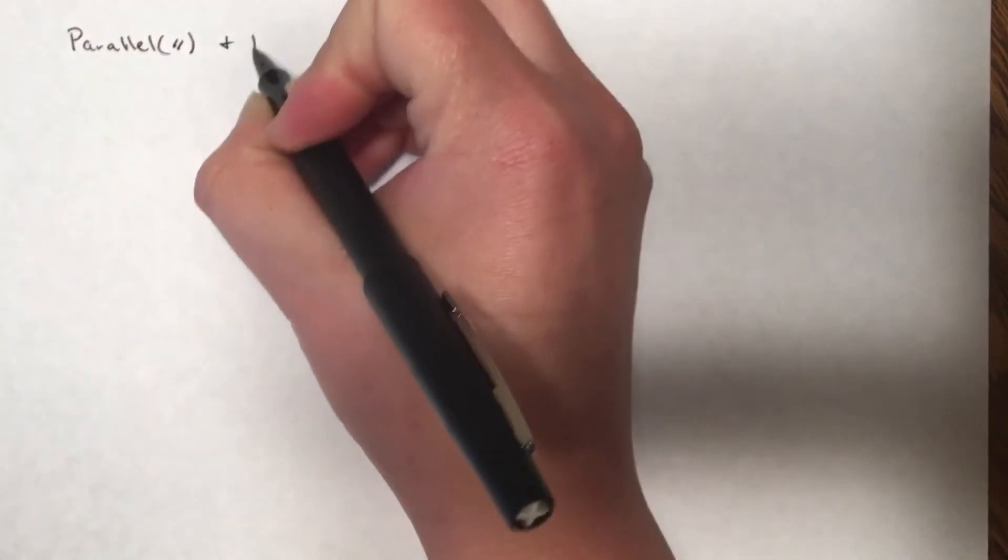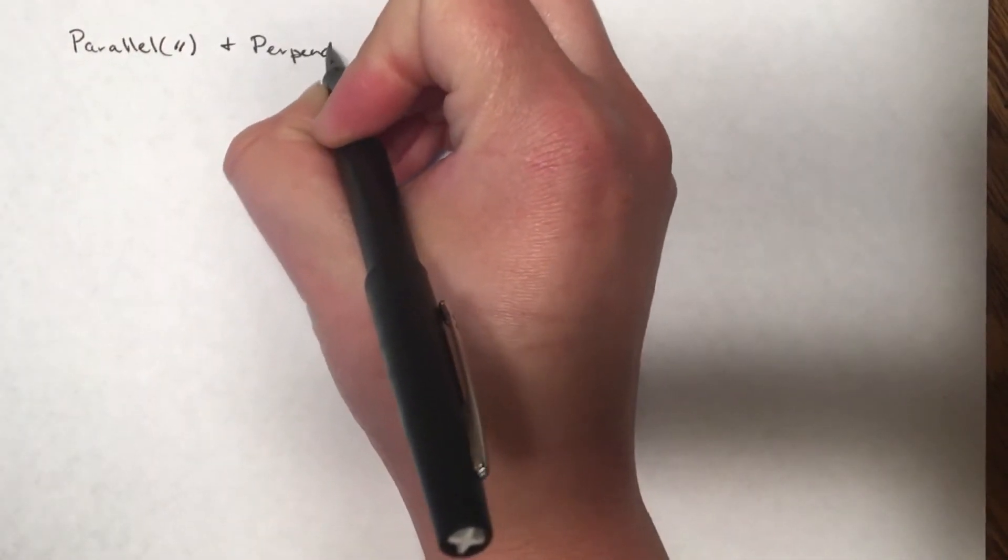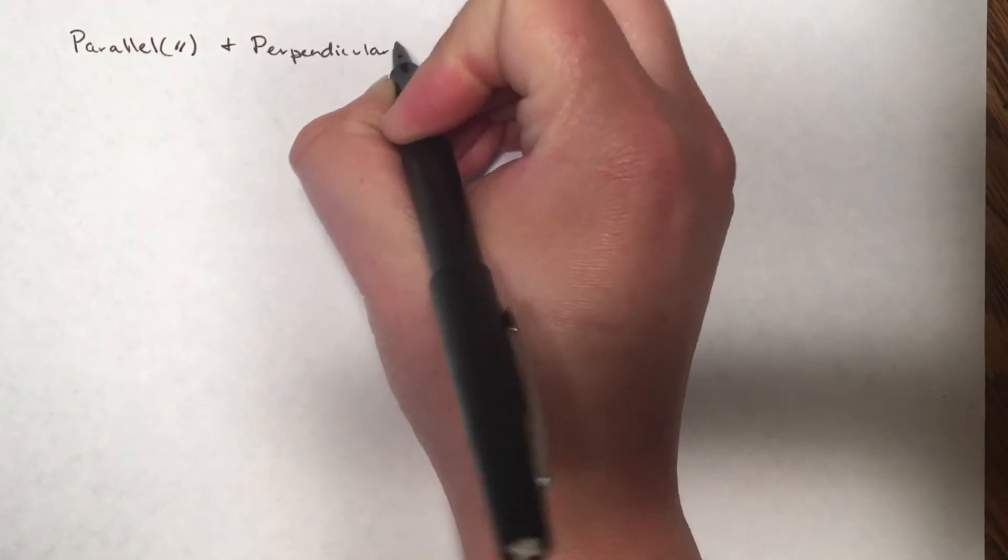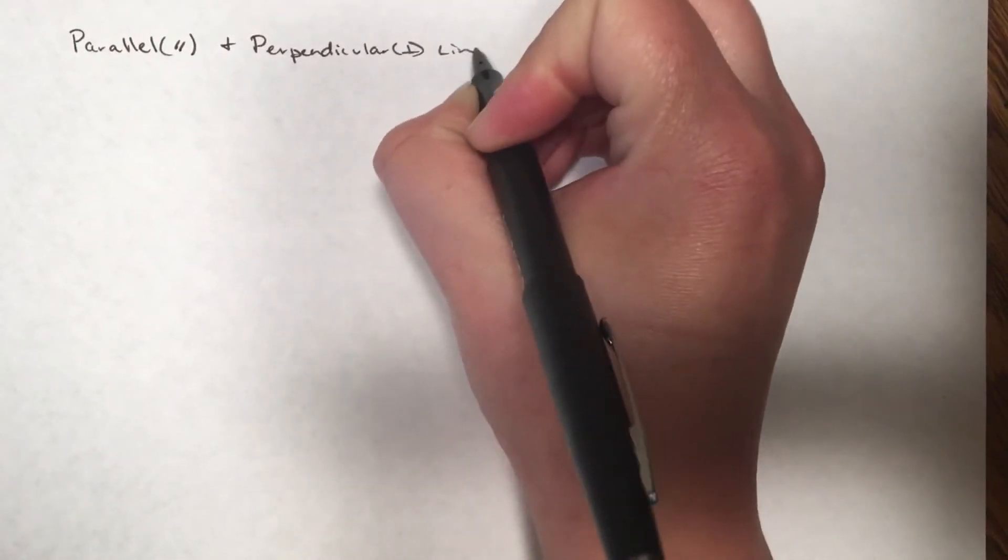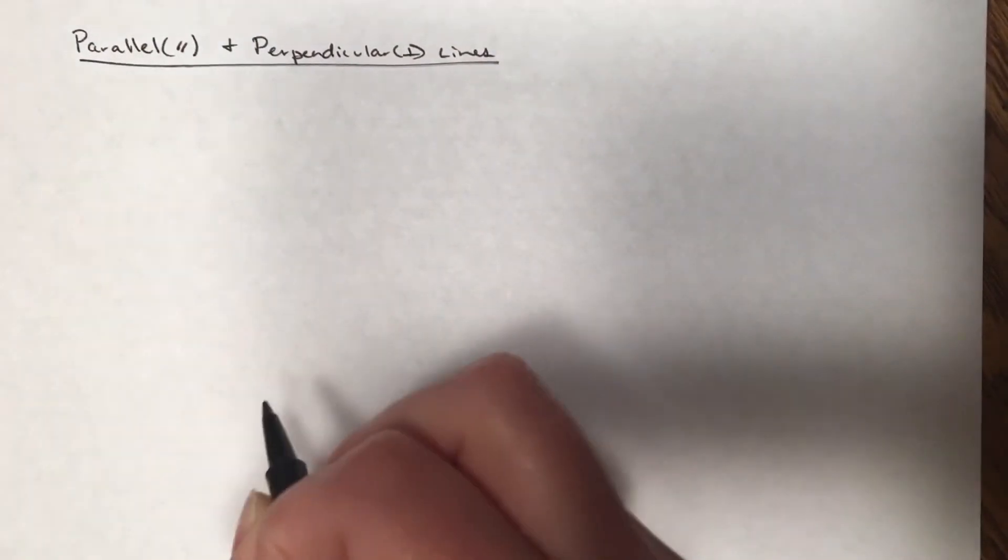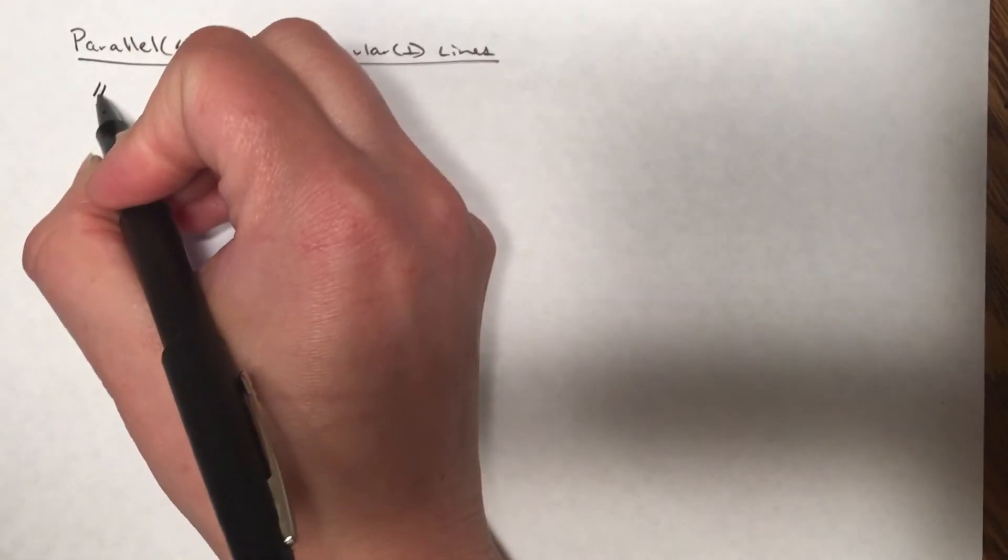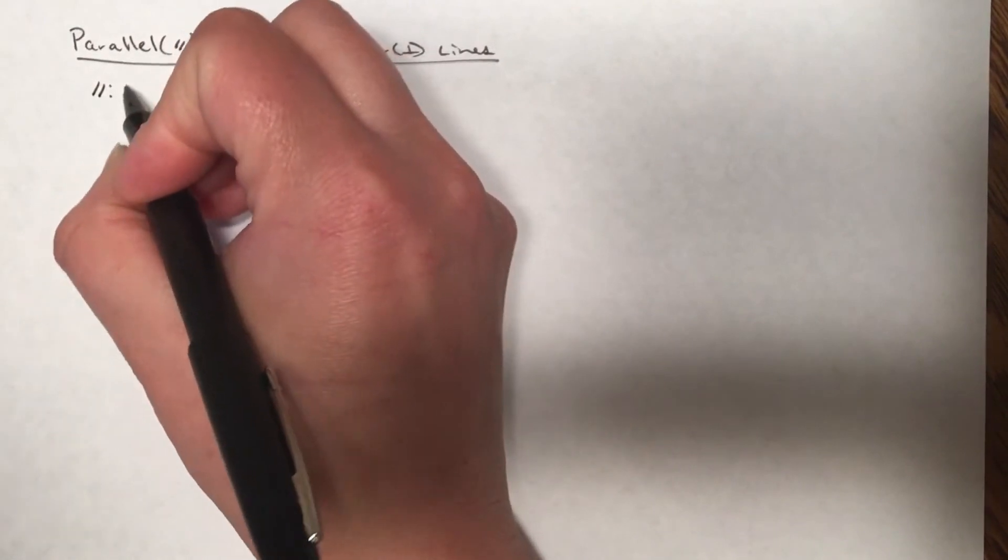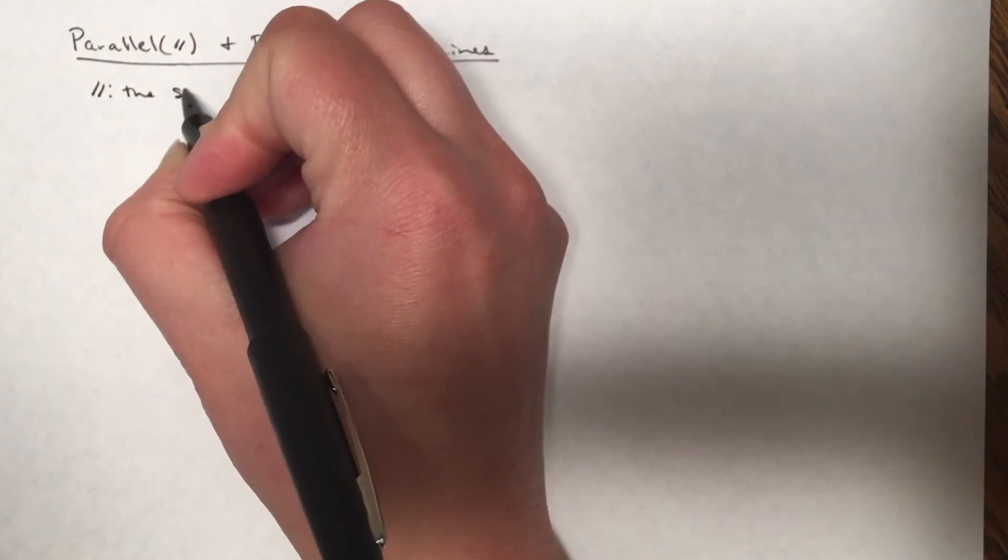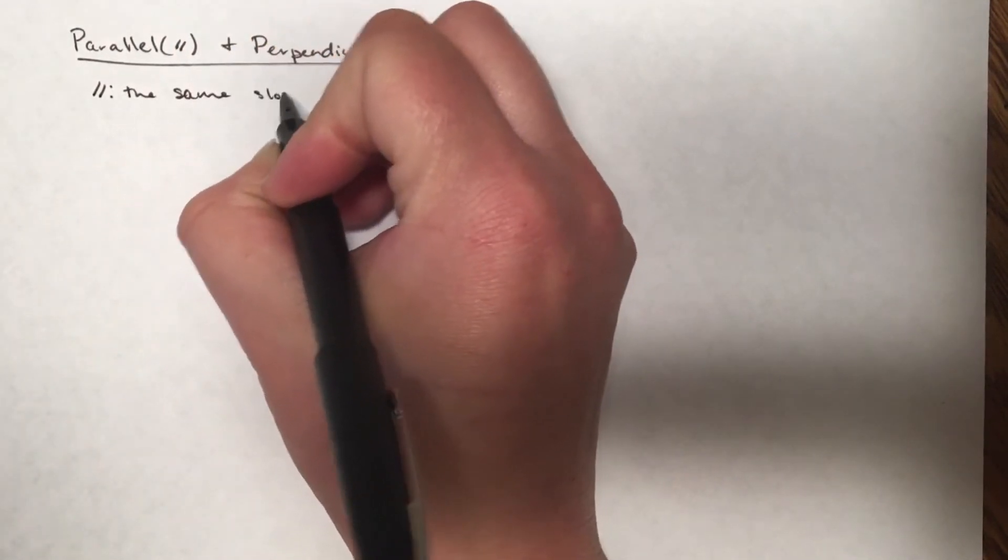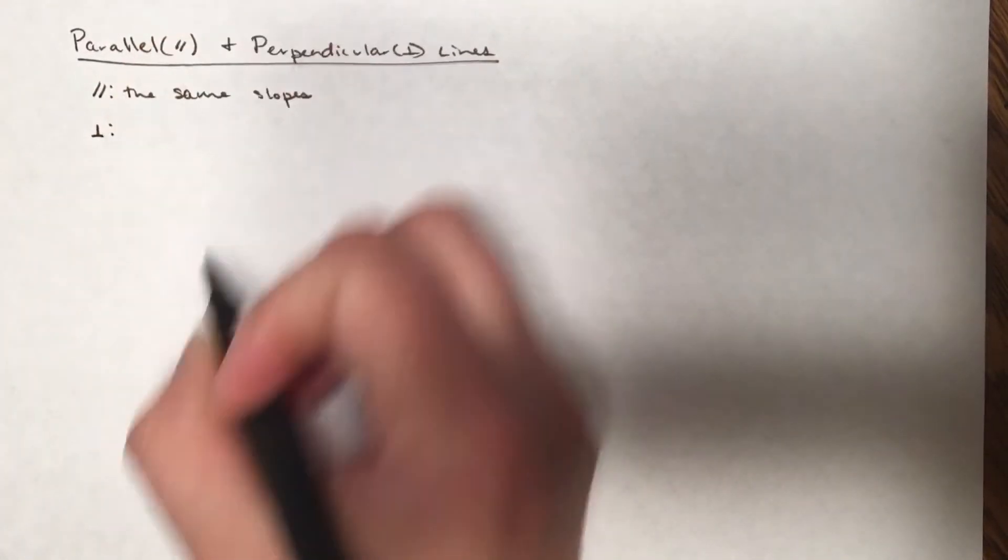We're going to be looking at parallel and perpendicular lines. When dealing with parallel and perpendicular lines, we're dealing with slope. Specifically, with parallel lines, the slopes are the same. I'm not going to show an example because it's pretty self-explanatory. With perpendicular lines...